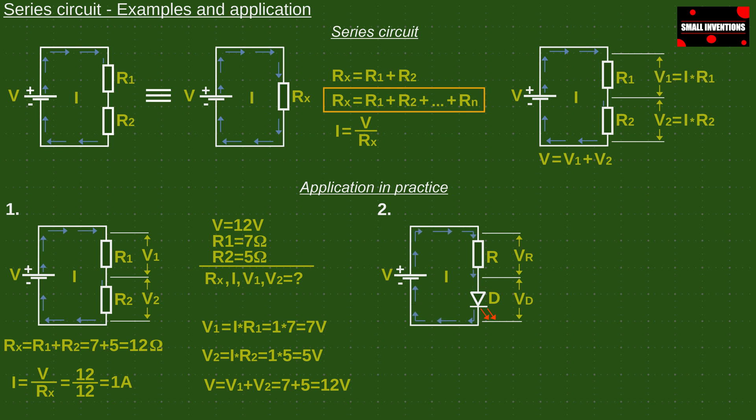Basic parameters of electronic components are available from the manufacturer. This is how we come to the initial values. For example, our diode has an operating voltage of 3 volts and a maximum current of 2 milliampers.